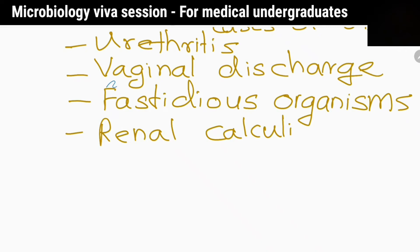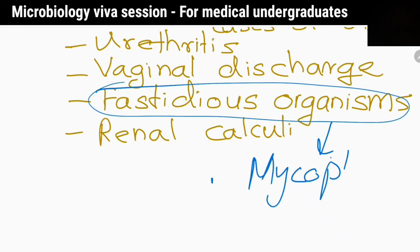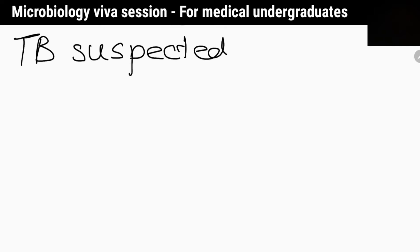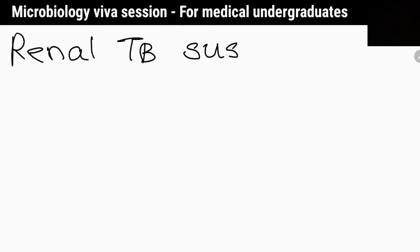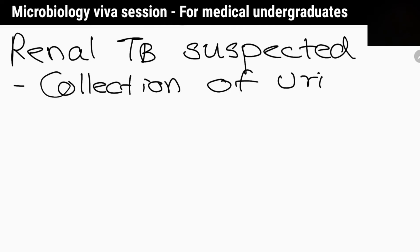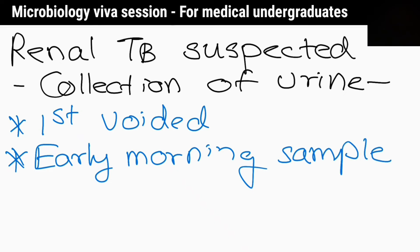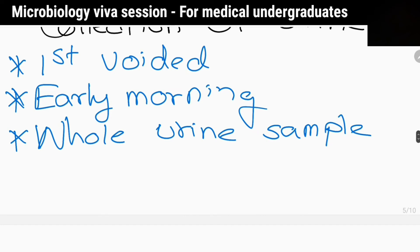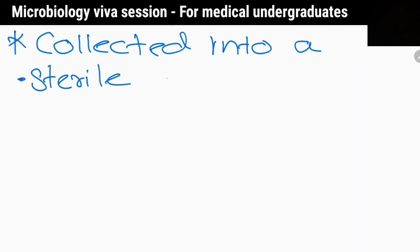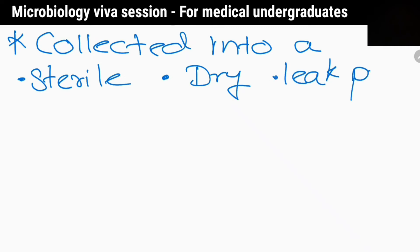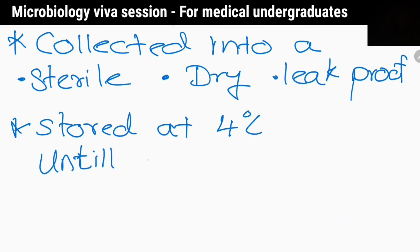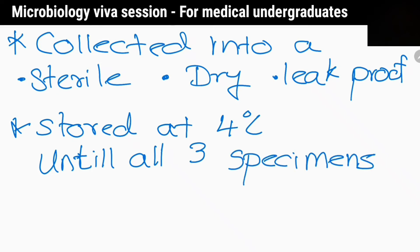What are those fastidious organisms? Mycoplasma and Ureaplasma. Tell me about the collection of urine sample from a patient suspected with renal tuberculosis. First voided early morning whole urine sample for three consecutive days should be collected into a sterile, dry and leak-proof, sufficiently large bottle. Specimens should be stored at 4°C until all three specimens have been collected.